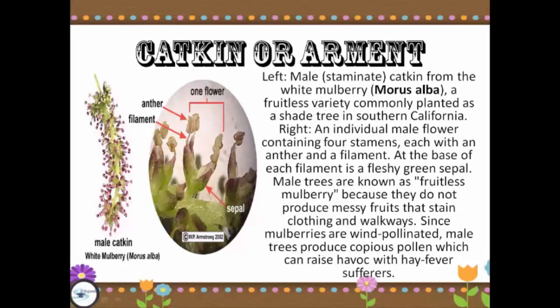On the left side of the picture you will see the male staminate catkin from the white mulberry, a fruitless variety commonly planted as a shade tree in Southern California. On the right side of the picture you will see the individual male flower containing four stamens, each with an anther on a filament. At the base of each filament is a fleshy green sepal. Male trees are known as fruitless mulberry because they do not produce the massive fruits that stain clothing and walkways. Since mulberries are wind-pollinated, male trees produce copious pollen which can raise havoc with hayfever sufferers.